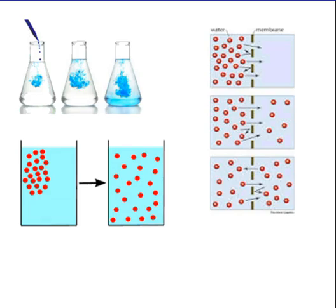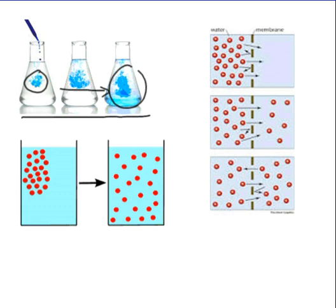Here we have a couple of different examples of diffusion. With the one showing blue dye moving, you put the blue dye molecules in and they start off at a very high concentration. They slowly spread out, and eventually the whole entire glass tube is going to turn a light blue color. It's originally a dark blue color, but then it's going to spread out evenly until it reaches equilibrium.